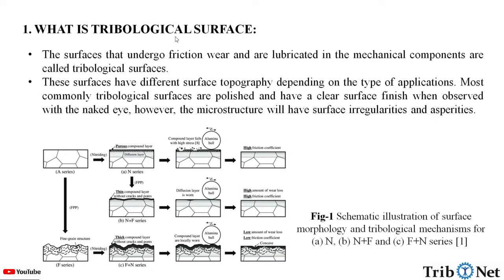What is a tribological surface? The surfaces that undergo friction, wear, and are lubricated in the mechanical components are called tribological surfaces. These surfaces have different surface topography depending on the type of applications. Most commonly, tribological surfaces are polished and have a clear surface finish when observed with a naked eye. However, the microstructure will have surface irregularities and asperities.